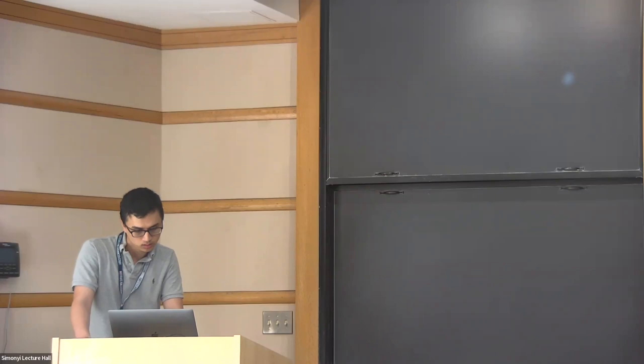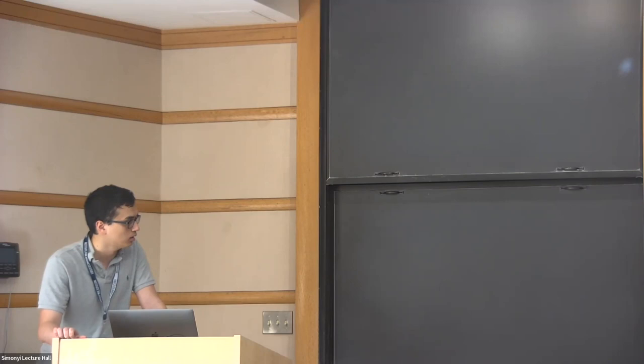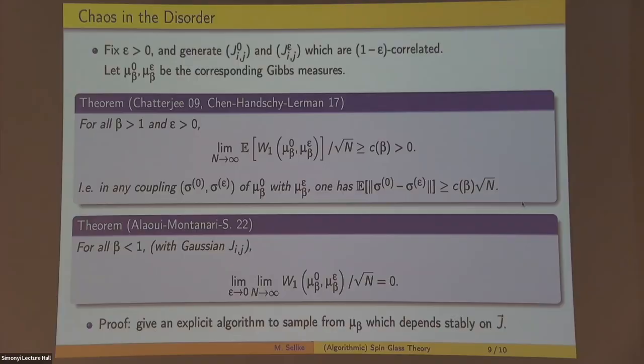You mentioned beta greater than one and beta less than one in your previous slide here. What should happen when beta equals one? I'm really not sure. There's no obvious conjecture if it's like a low temperature or a high temperature case, or if it's something else. Yeah, I have no idea.